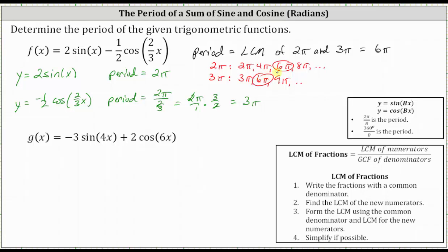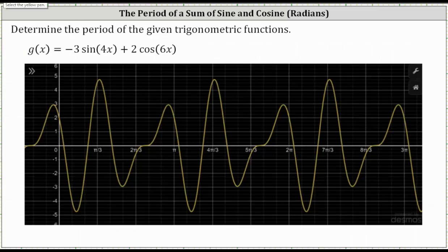Let's take a look at a second example. We have g of x equals negative three sine four x plus two cosine six x. Let's first look at this graphically, starting at the y-axis where x equals zero, to see how long it takes for the graph to repeat itself.